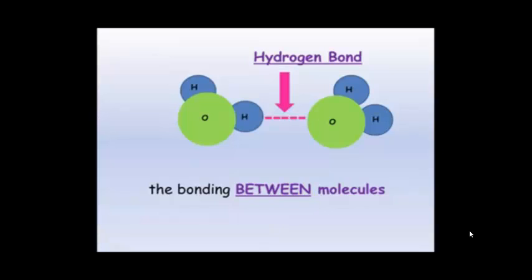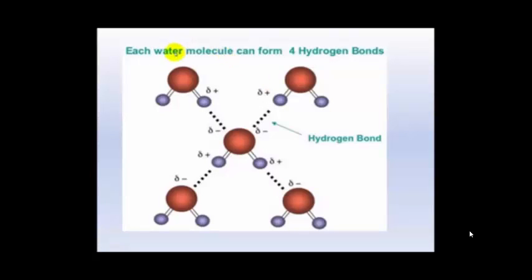And the Hydrogen bonding though is between the molecules. It is an intermolecular bond. Each water molecule can form four Hydrogen bonds. And it forms a crystalline lattice. This is really important with water's properties and water's structure.